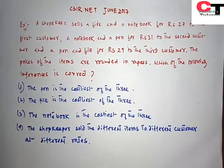This question is from CSRnet June 2017. The question is: a shopkeeper sells a file and a notebook for Rs.27 to the first customer, a notebook and a pen for Rs.31 to the second customer, and a pen and a file for Rs.29 to the third customer. The prices of the items are rounded in rupees. Which of the following inferences is correct?